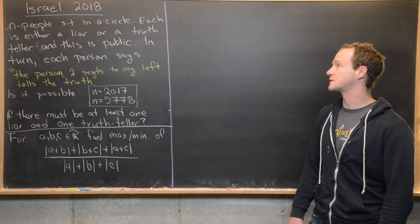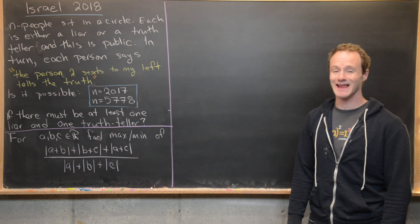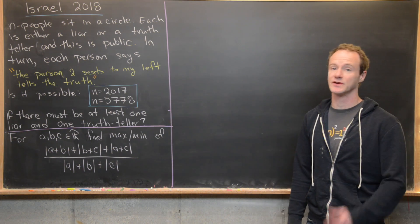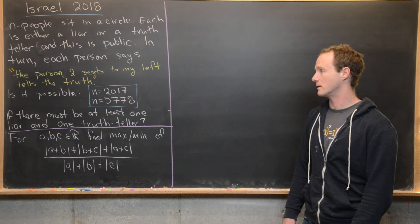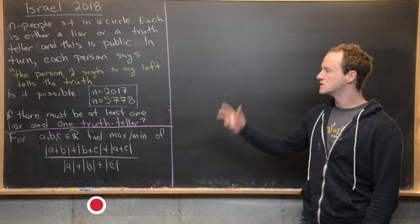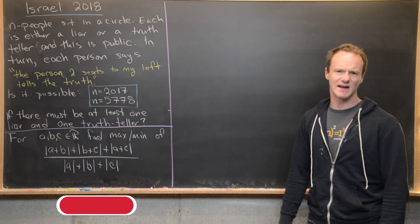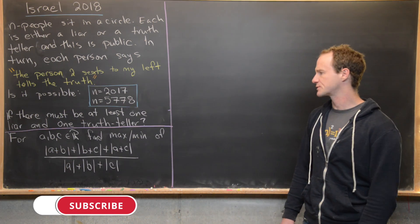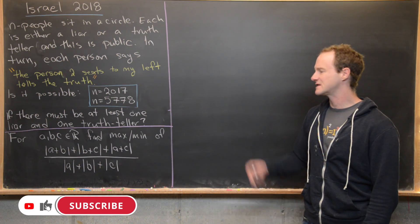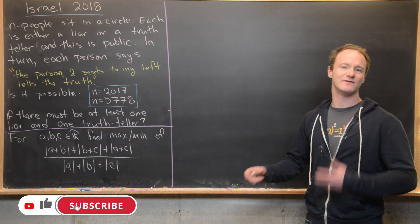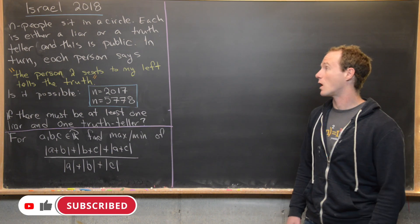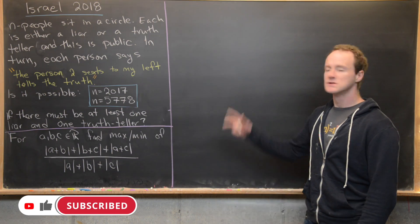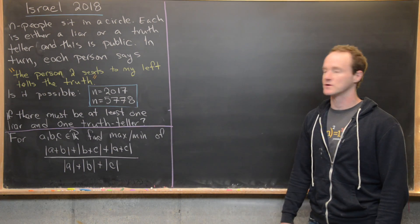Here we're going to look at two problems from the 2018 Israel National Math Olympiad. The first one is a nice combinatorics problem, and the second one involves an inequality.